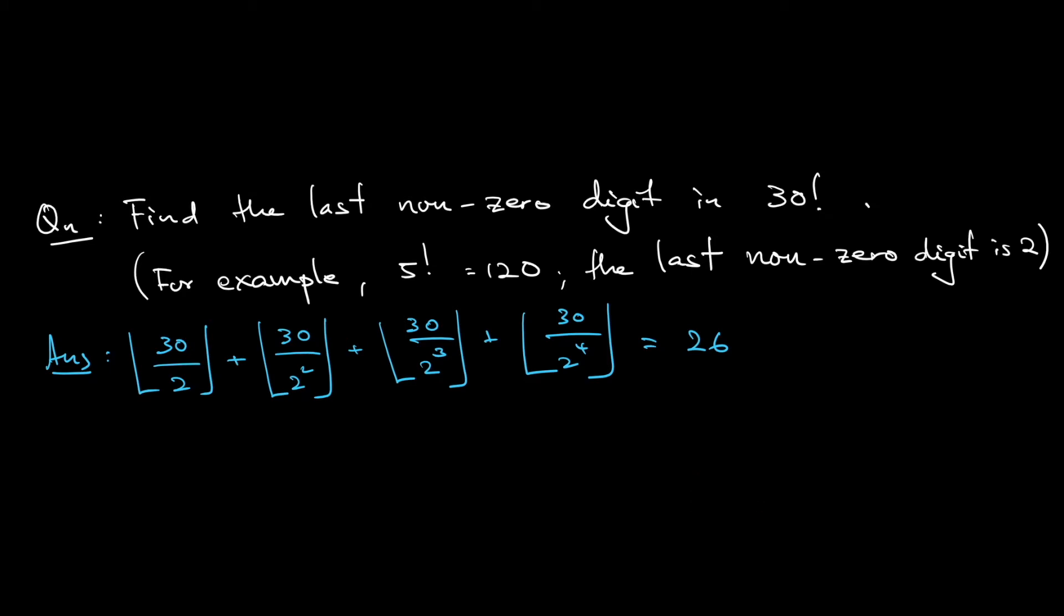So next is 3. Do the same thing: the floor of 30 divided by 3, 3 squared, 30 divided by 3 cubed, and that's all because 3 to the power of 4 is already more than 30. This you can check, you will get 14.